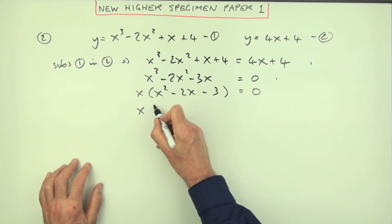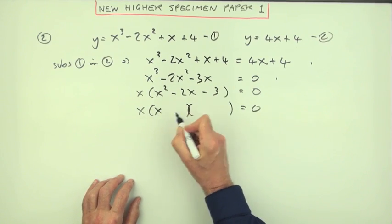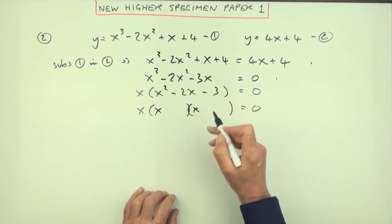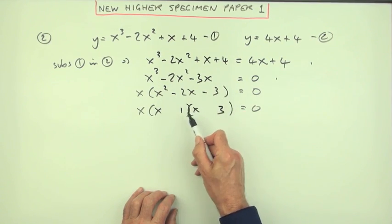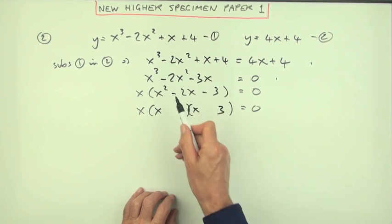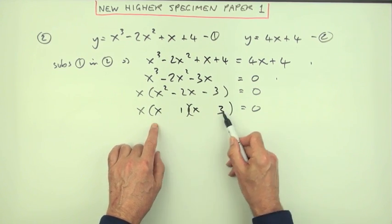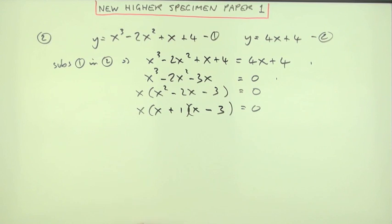Now factorize this quadratic. And it's paper one so it should factorize well. The first times the first makes the first - it can only be x times x. The last times the last makes the last - so that's a one and a three. And that's right because these numbers multiply to give three and I've got a difference of two. The sign of the middle term always goes to the larger product out of the outer and the inner, so that's the minus. That says they're opposites. So that's it done, that's it factorized - that's your third mark.